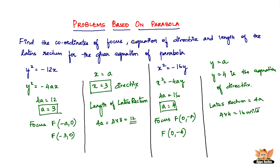We found all three things required for both equations: the coordinates of focus, the equation of directrix, and the length of the latus rectum. To find these quickly, you need to be familiar with all four forms of the equation of parabola: y² = 4ax, y² = -4ax, x² = 4ay, and x² = -4ay. You need to know the coordinates of focus and the equation of directrix for each. But the length of the latus rectum is always 4a — it's the same for all forms because it's a length and has no sign. That ends these problems as well as this video. I'll see you in the next videos with more concepts and problems based on parabola.